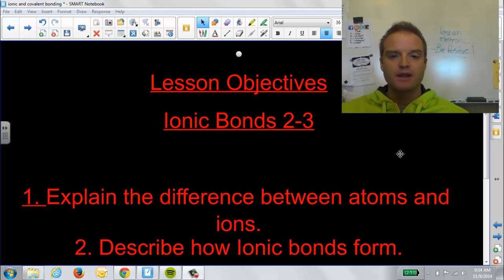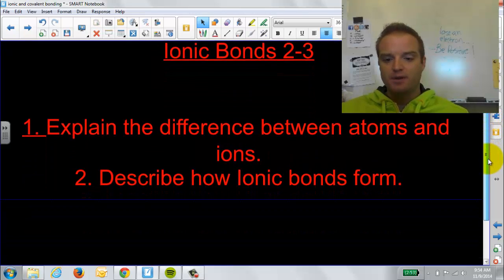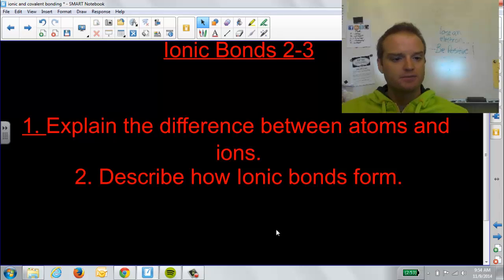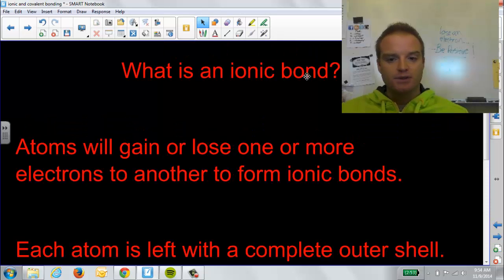So, this first screen, don't write anything down. This is kind of the big ideas of the lesson today. Our lesson objectives are two things you want to be able to discuss and do at the end of the lesson. Explain the difference between atoms and ions, or how an atom becomes an ion. And also, how ionic bonds actually form. Those are our two big goals of the day.